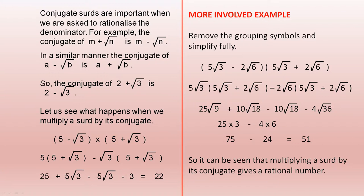Conjugate surds are important when we are asked to rationalize the denominator. For example, the conjugate of m plus the square root of n is m minus the square root of n. In a similar manner, the conjugate of a minus the square root of b is a plus the square root of b. So the conjugate of 2 plus the square root of 3 is 2 minus the square root of 3.